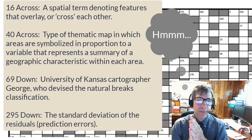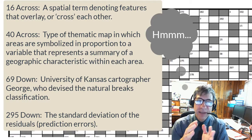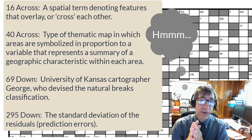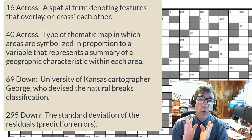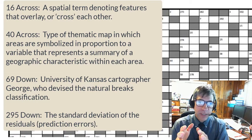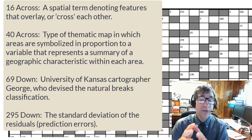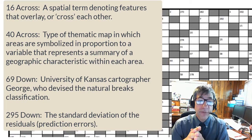40 across: type of thematic map in which areas are symbolized in proportion to a variable that represents a summary of a geographic characteristic within each area.